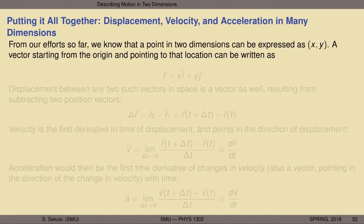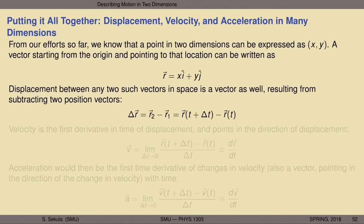We can put this all together. We have all of these quantities now in many dimensions — two and three spatial dimensions are the ones we care about. A point in two dimensions can be expressed as (x, y). A vector starting from the origin pointing to that location is written as r = x i-hat + y j-hat in two dimensions, where x and y are the coordinates of the arrowhead. The displacement between any two such vectors in space is also a vector, resulting from subtracting two position vectors: if we have position at later time t2 called r2 vector, and position at earlier time t1 called r1 vector, the displacement delta r vector is given by r2 vector minus r1 vector.